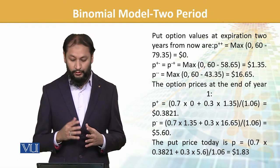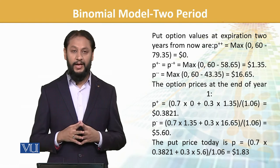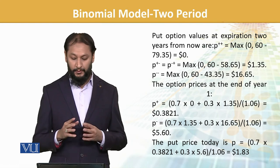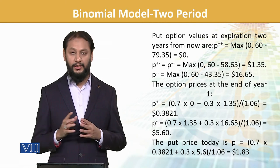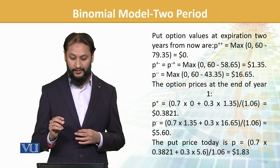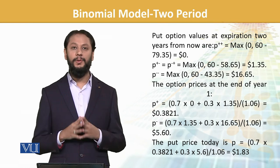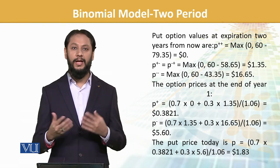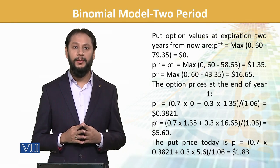Both circumstances we have covered. The put price today is P = (0.7 × 0.381) + (0.3 × 5.6) / 1.06 = $1.83. This should be the value computed as per the formula we have just seen in the beginning.